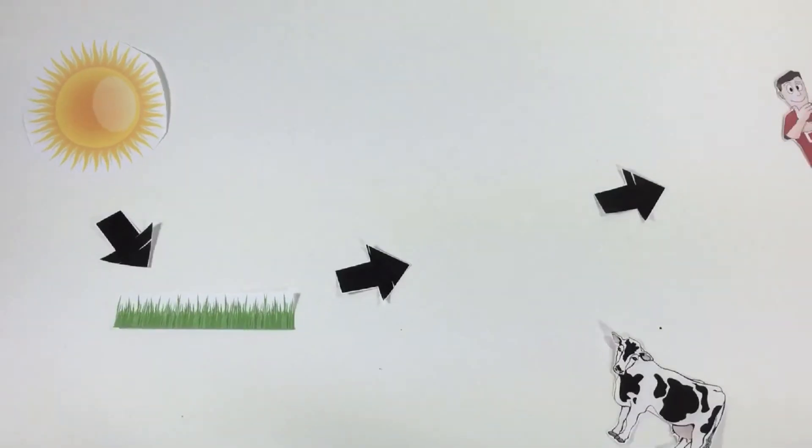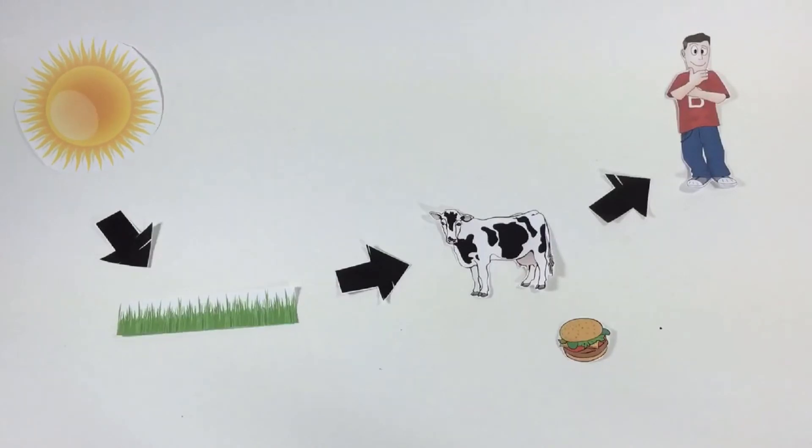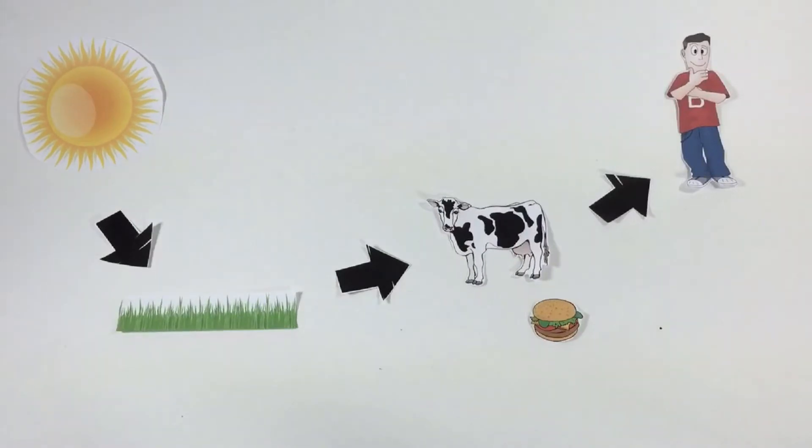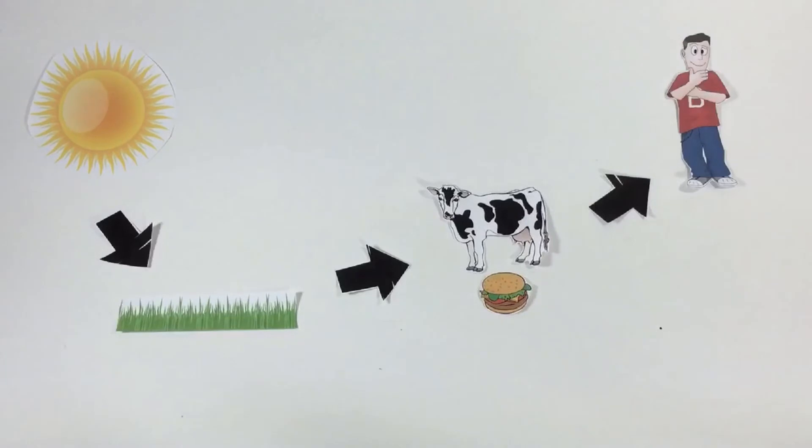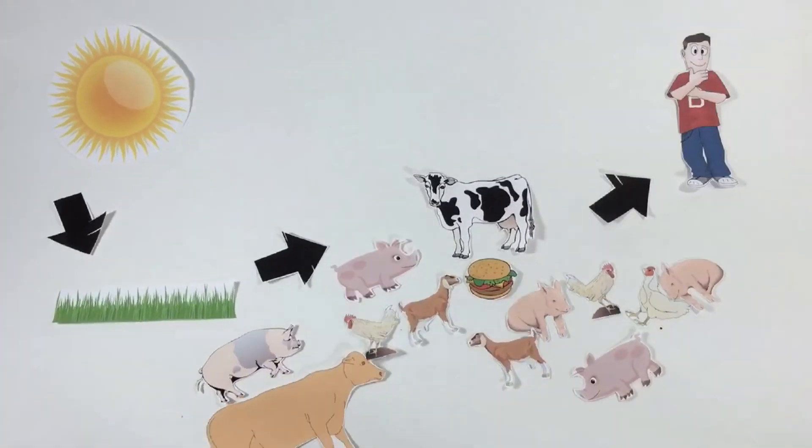Even though we might not think it, humans are still bound by the laws of nature. When we eat hamburgers, we are putting ourselves on the top of the food chain. We need a lot more cows than humans to support our meat-eating ways.